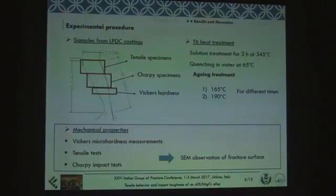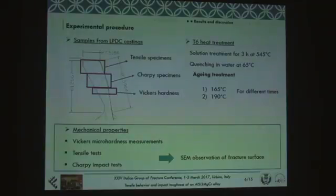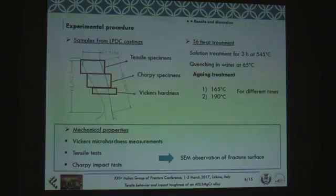For the experimental procedure, we took the samples from low-pressure die cast components — not from parts produced with the innovative technique — just to avoid all the issues related to the optimization of this process, which is still under development. Some of the samples were tested in the as-cast condition, while other samples were heat-treated. Solution treatment and quench conditions were fixed, while we changed the aging conditions, testing two different temperatures and different times.